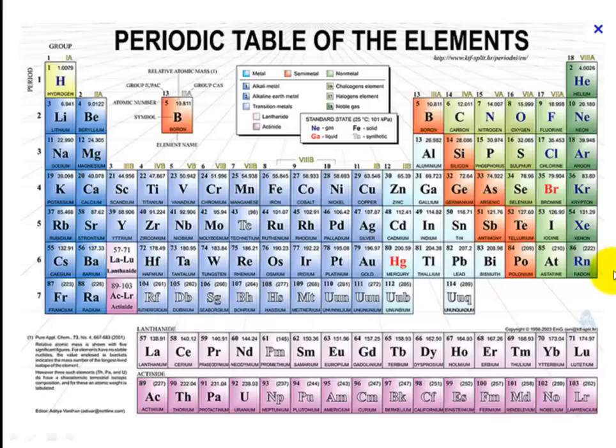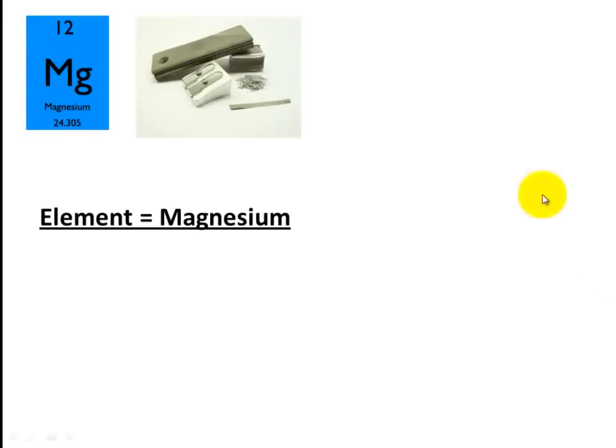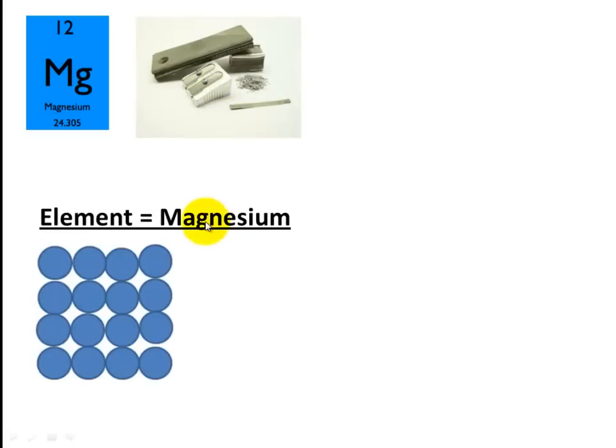So an atom is the smallest building block that makes up everything. For example here, Magnesium. You can see Magnesium makes up all of these different things. Pencil sharpeners, there's a piece of Magnesium here. The element is known as Magnesium.